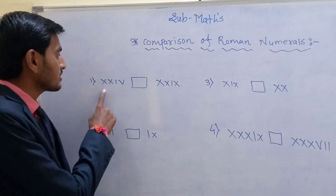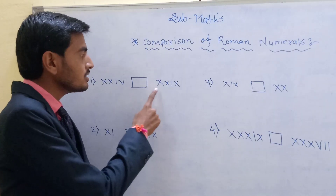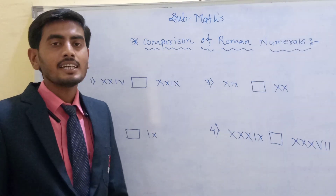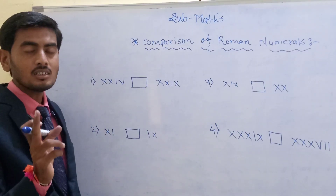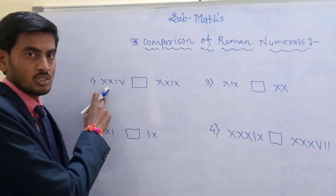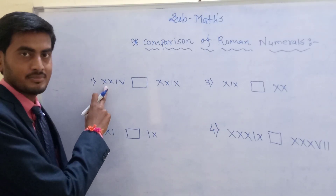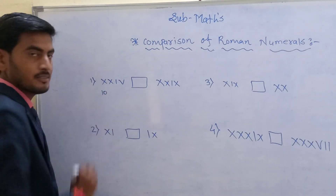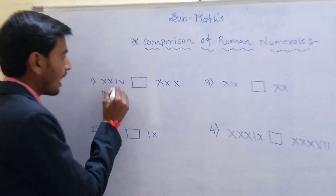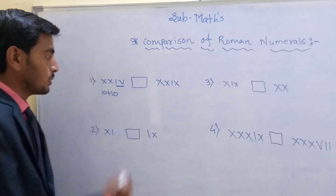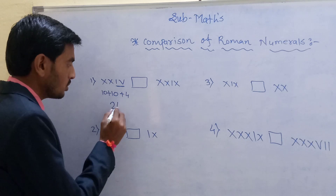The first example is XXIV. Firstly, identify the Hindu-Arabic number of this Roman number. X represents 10, another X means plus 10, and IV means 4. So the total Arabic number is 10 plus 10 plus 4, which is equal to 24.